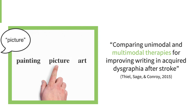As a third example, this research aimed to improve spelling by having patients choose the correct word from semantic, phonological, and orthographic distractors, and they also copied and verbalized words. And this was also called multimodal therapy.